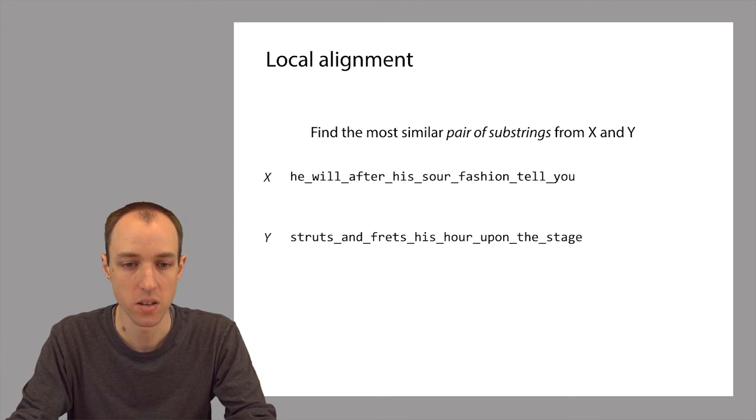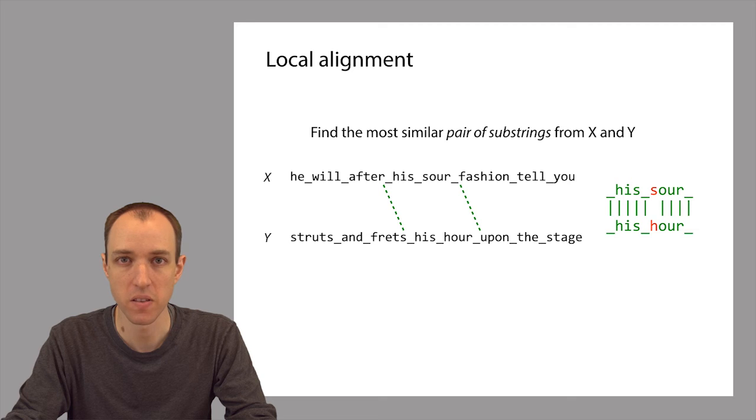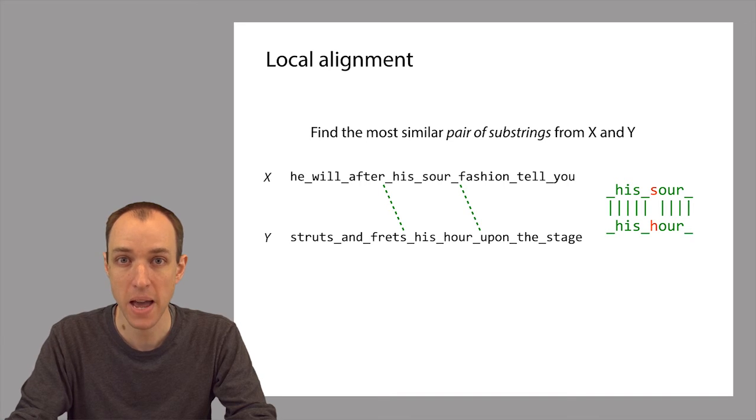So here are two strings. They're in English, so that the similarities are more obvious to us. And the question is, can you find a pair of substrings, one from x and one from y, that are the most similar? So looking at this example, it seems like these substrings in the middle here are the most similar. They're at Hamming distance one from each other, but they have nine matching positions with each other. So this is approximately the kind of problem that we're solving with local alignment.